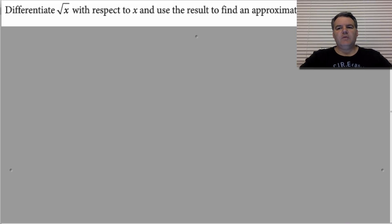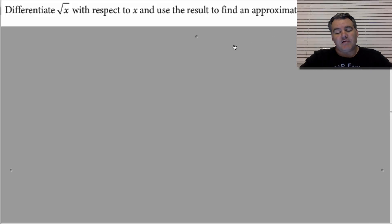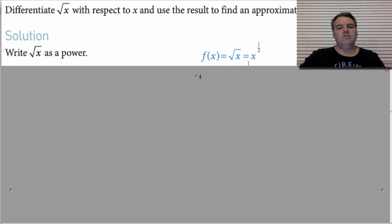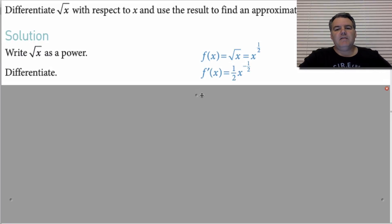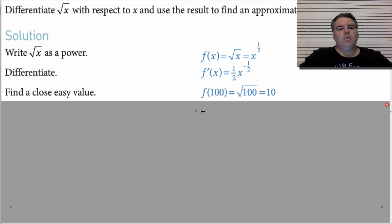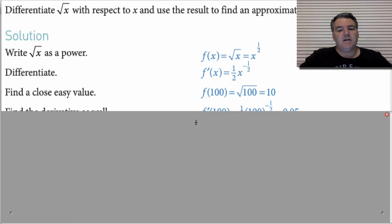Check this one out here. We want to find the approximate value of the square root of 103. We know the square root of 100 is 10, so what's going on if we just increase by 3? We've got the derivative here: a half x to the minus a half. We know f(100) — if f(x) is root x — we know f(100) is 10. We want to know what f(103) is.